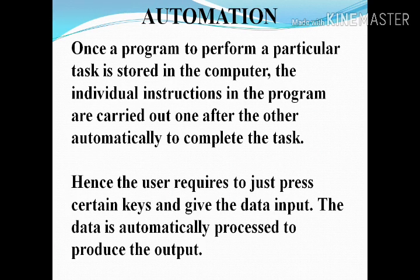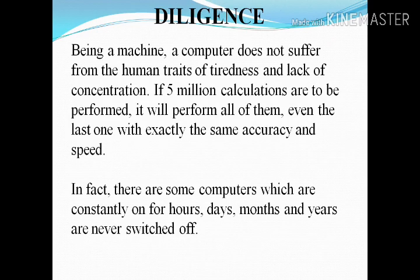Next is automation. To perform a particular task stored in the computer, the individual instructions in the program are carried out one after another automatically. Diligence is also a characteristic — computers don't have tiredness like human beings, and they don't have lack of concentration. So if five million tasks are given, the last one will be performed with the same accuracy and same speed.